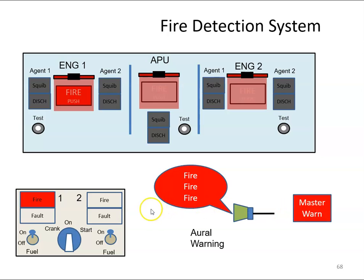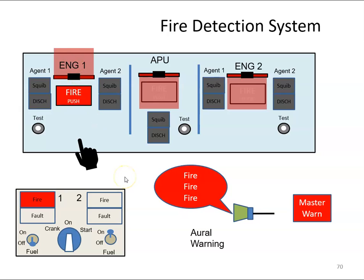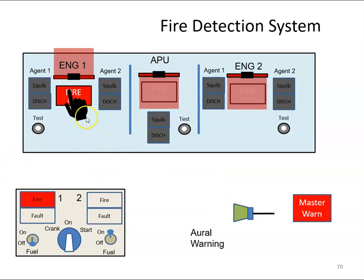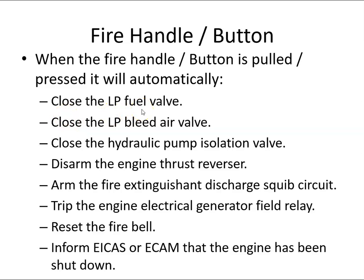What we can do then is shut down the engine — switch the engine off — then lift the guard. When this guard is lifted, the push button can then be pressed. When this push button is pressed, it silences the alarm, closes the low-pressure fuel valve, closes the hydraulic pump isolation valve, disarms the engine thrust reverser, and arms the fire extinguisher discharge squib circuit.